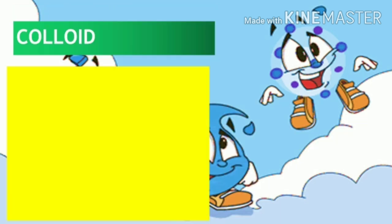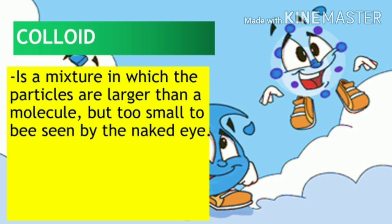Another classification of a mixture is a colloid. What is a colloid? It is a mixture in which the particles are larger than a molecule but too small to be seen by the naked eye. Colloid particles range from 1 to 100 nanometers in size.